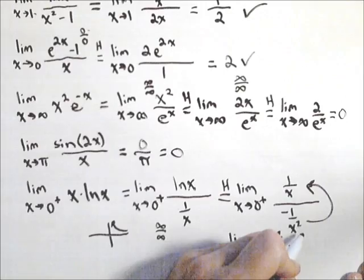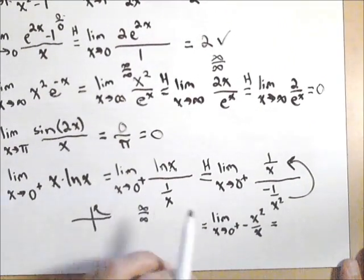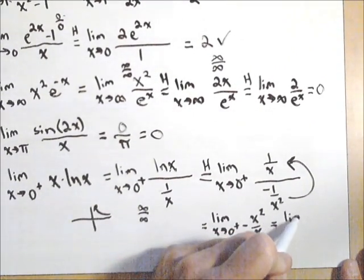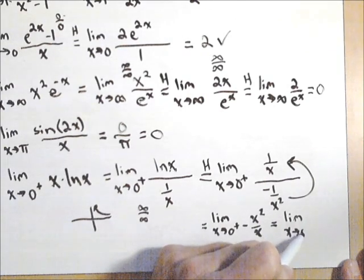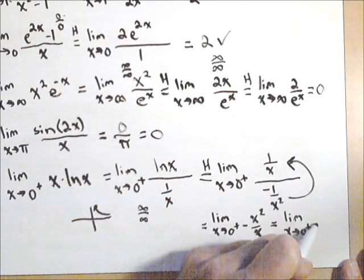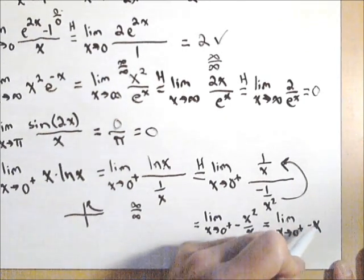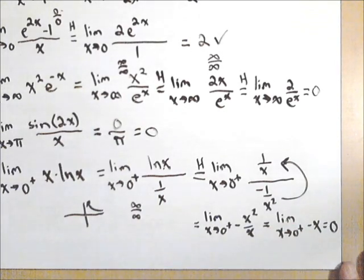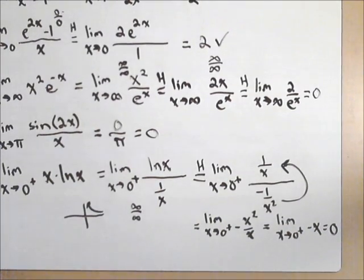Which reduces down to limit as x goes to zero from the right of negative x, which equals zero. And we are done. So there's some examples of employing L'Hopital's rule.